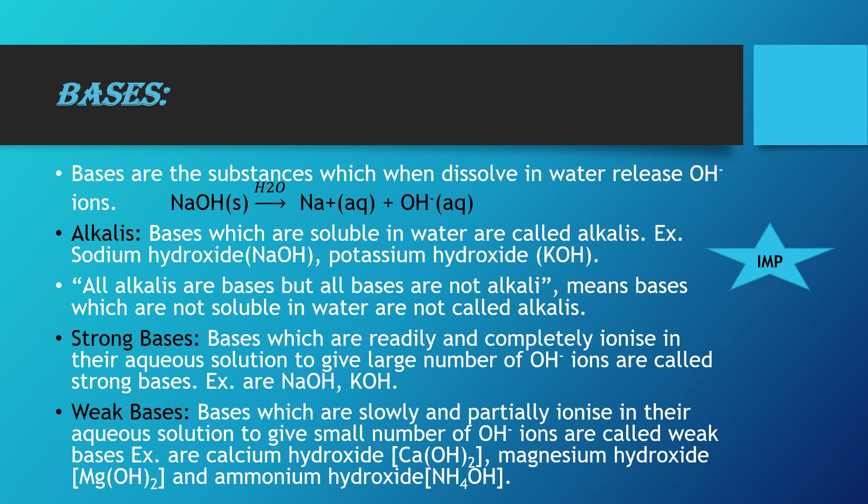Next are weak bases. Bases which are slowly and partially ionized in their aqueous solution to give only a small number of hydroxide ions are called weak bases. For example, calcium hydroxide, magnesium hydroxide, ammonium hydroxide, etc. If you take 100 molecules of ammonium hydroxide, you may get only 30 or 40 hydroxide ions — that is why it is a weak base.